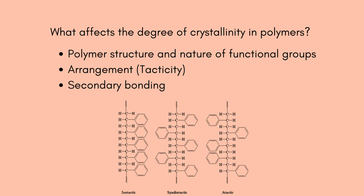Thirdly, secondary bonding is also one of the factors. Both inter- and intramolecular hydrogen bonding play important roles in polymer crystallinity. With increased chain-to-chain secondary bonding, there is an increase in the degree of crystallinity of the polymer.